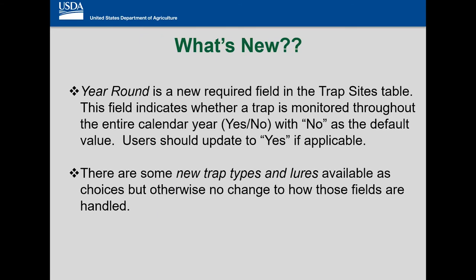So just to jump in — what's new? This year we've got a field called 'Year Round' and it's defaulted to no. That year round field is important because it guarantees that the end user tools transfers your year round trap sites into the next year's map, saving you the time and trouble of mapping them again for the following year. So if this is a year round trap, you should change that to yes; otherwise it's defaulted to no.